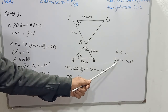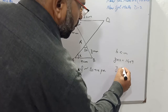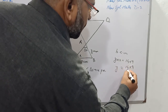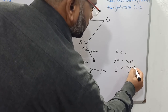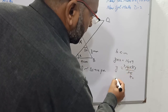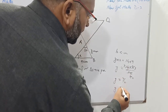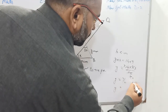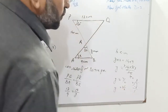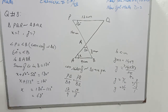12 is multiplying with Y; when we transfer it to the other side, it divides. Y is equal to 14 multiplied by 9 over 12. Simplifying: 9 over 12 reduces to 3 over 4, and 14 times 3 over 4 gives 7 over 2. So the value of Y is 7 over 2, which equals 3 whole 1 over 2, or 3.5 cm.